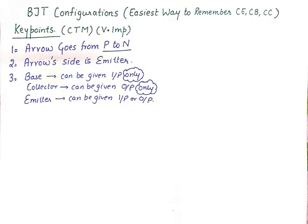Hello friends, welcome to another tutorial in analog electronics. In today's tutorial we'll talk about a very important topic: BJT configurations. A bipolar junction transistor can be configured in three different ways, and the easiest way to remember the configurations is what I'm going to explain in this video. If you have problems identifying the configuration of a transistor in a network, you should be able to do that without problems after watching this video.